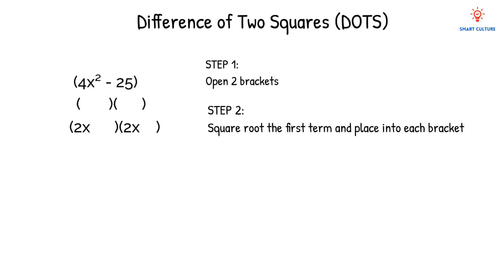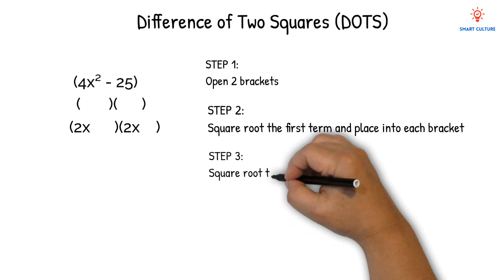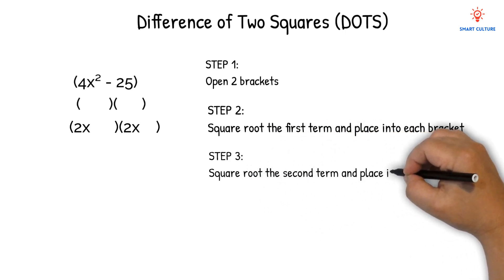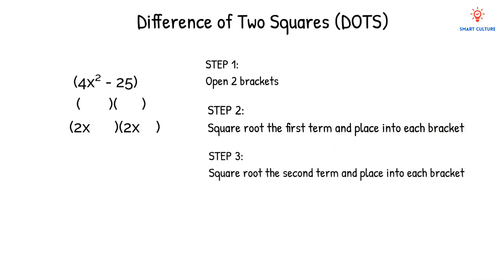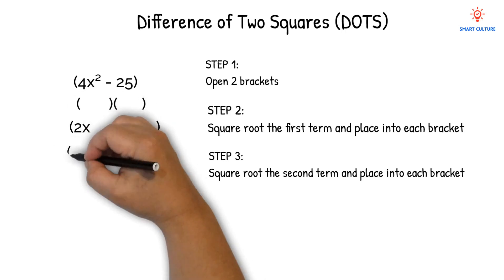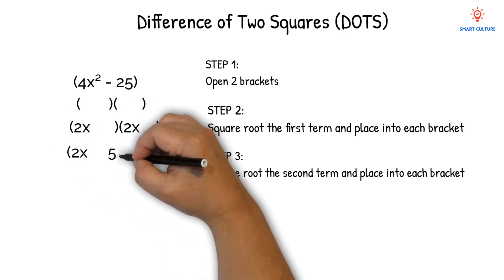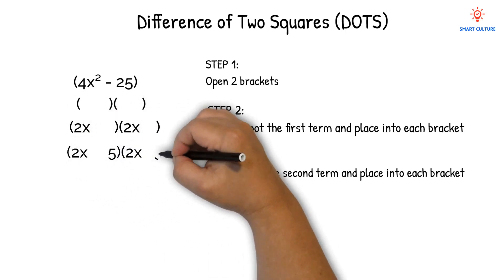Square root the second term. What is the square root of 25? 5. So we place 5 in each bracket. Now we do the last step.